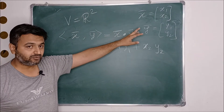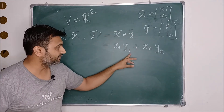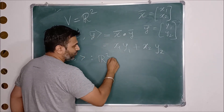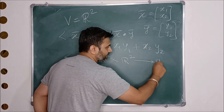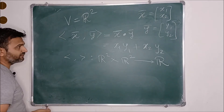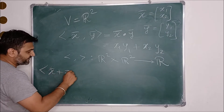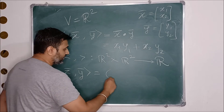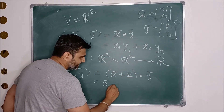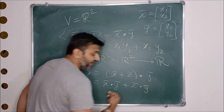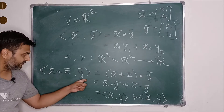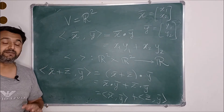So x-bar and y-bar are vectors of R², and the dot product is a real number because x₁, y₁, x₂, y₂ are all real numbers. So the dot product is a function from R² cross R² to R, taking two vectors as input and giving a real number as output. To prove the linearity property, the inner product of (x-bar + z-bar, y-bar) is (x-bar + z-bar) dot y-bar, and since the dot product distributes, this equals x-bar dot y-bar plus z-bar dot y-bar, which is the inner product of (x-bar, y-bar) plus the inner product of (z-bar, y-bar). So the linearity property is satisfied.